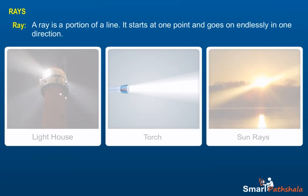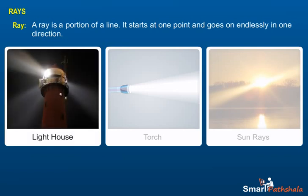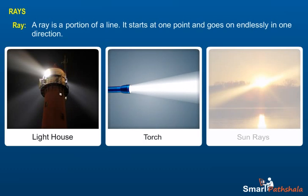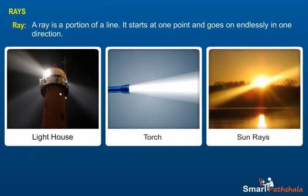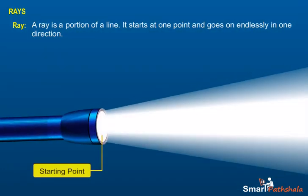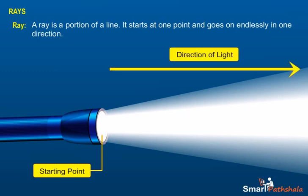Rays: one, examples of a ray are beam of light from a lighthouse, ray of light, light from a torch, and sun rays. Two, a ray is a portion of a line. Three, it starts at one point called starting point and goes endlessly in a direction.